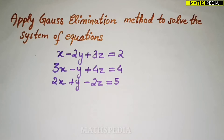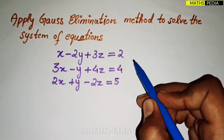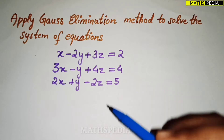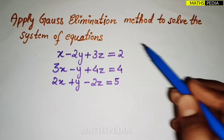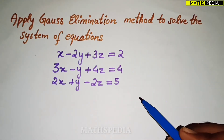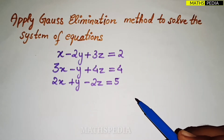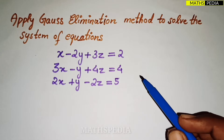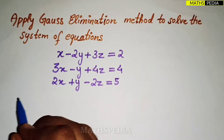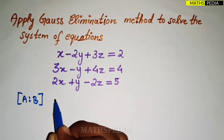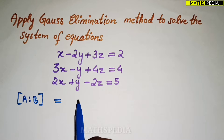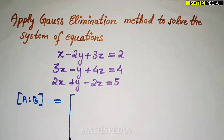In this video we'll solve one problem based on Gauss elimination method. This is a method for solving a system of equations. Three equations are given with three variables: x, y, and z, and the constants are on the right-hand side. The first step is to form the augmented matrix, written as A augmented with B.